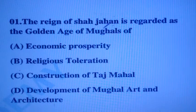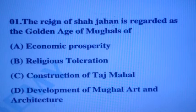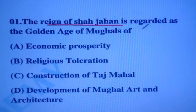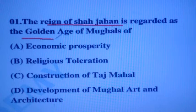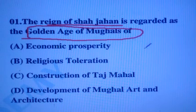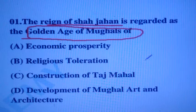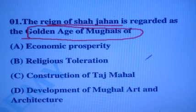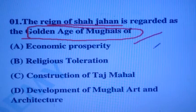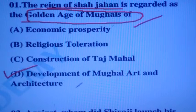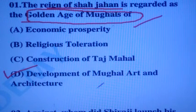First question: The reign of Jahangir is recorded as the golden age of Mughals. The answer is Option D — development of Mughal art and architecture.